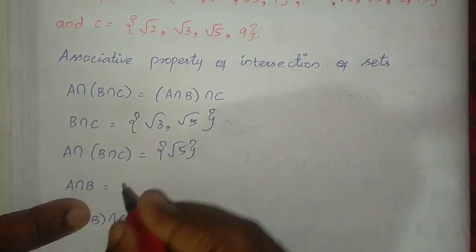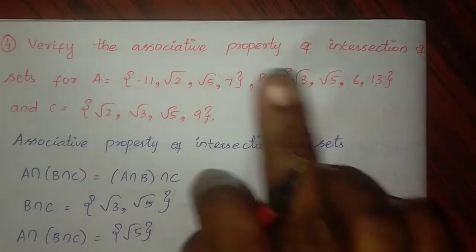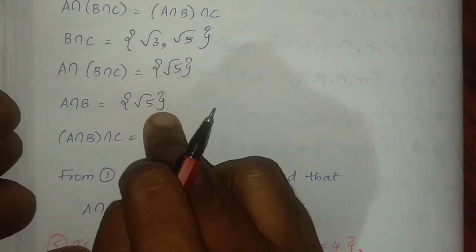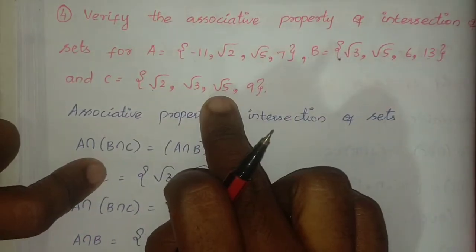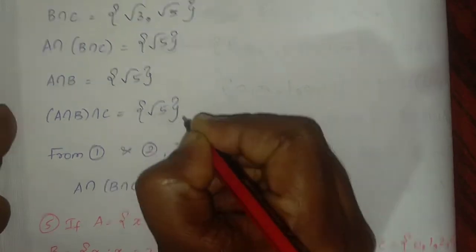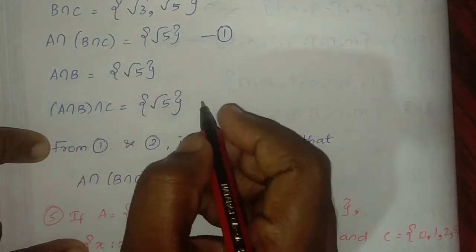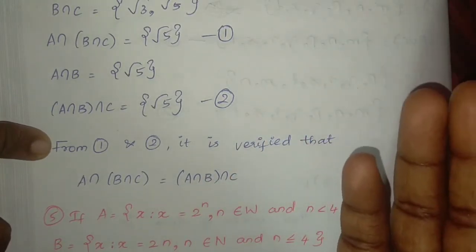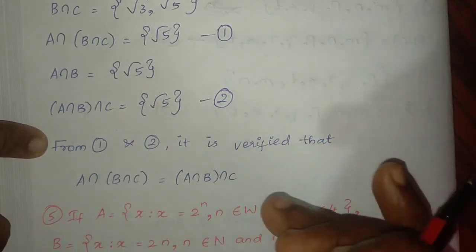Now find A intersection B intersection C by the other grouping. Common elements are found. Root 5 appears in both calculations. The answer confirms A ∩ (B ∩ C) equals (A ∩ B) ∩ C. The associative property of intersection of sets is verified.